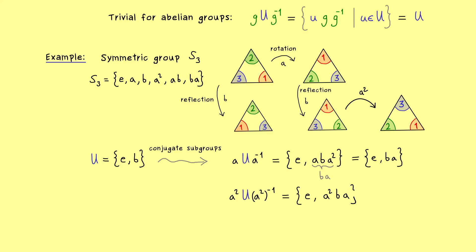And there you can do a similar picture as before. And you see that this construction a squared ba is actually just ab. So again we get another subgroup and now it's e, ab.